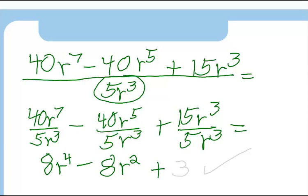Plus, 5 goes into 15 three times, and r to the 3rd over r to the 3rd is r to the 3 minus 3, which is r to the 0, which is 1. So 3 times 1 is 3.